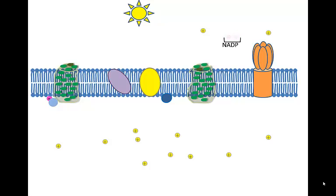This process is called non-cyclic photophosphorylation, because the electrons travel in a straight line, from water to Photosystem II, down the electron transport chain to Photosystem I, and onto an electron carrier.